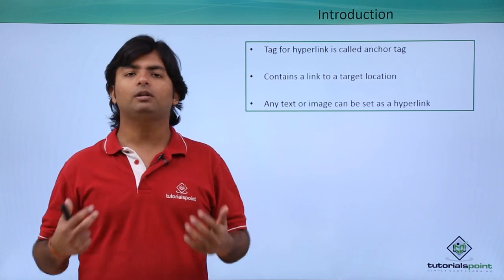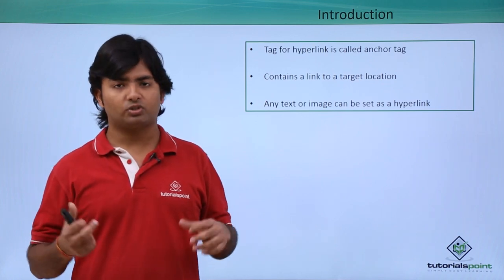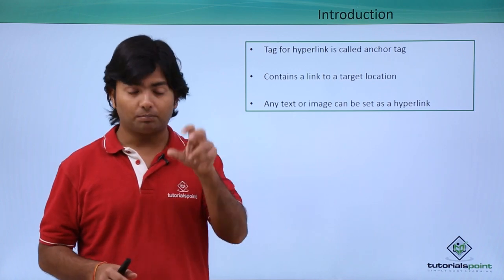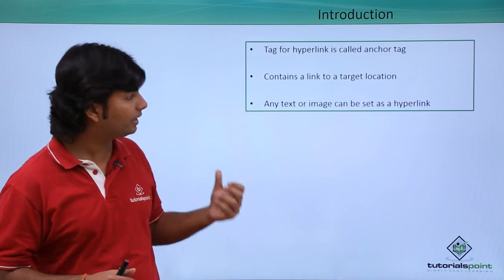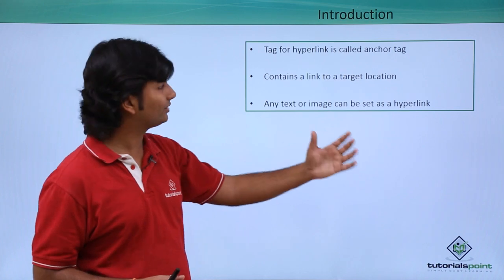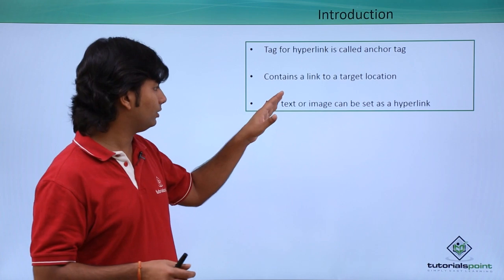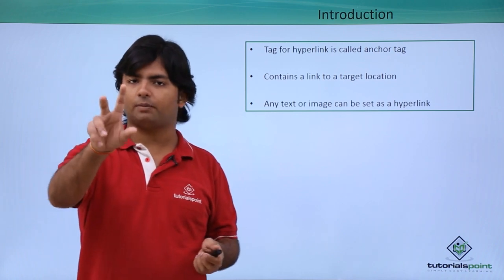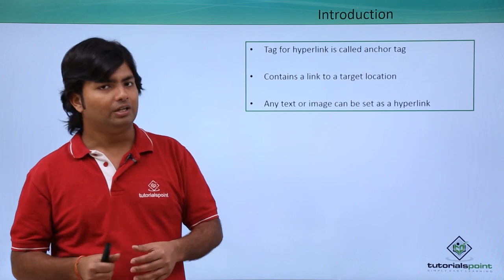As soon as you click over that link you will reach your destination. As mentioned in previous videos, whatever text is used to create your web page is hypertext, and if that particular text contains a link, that will be a hyperlink. The anchor tag contains the link to a target location, and you can put an image or text as a hyperlink — when you click over it you will reach a particular destination.